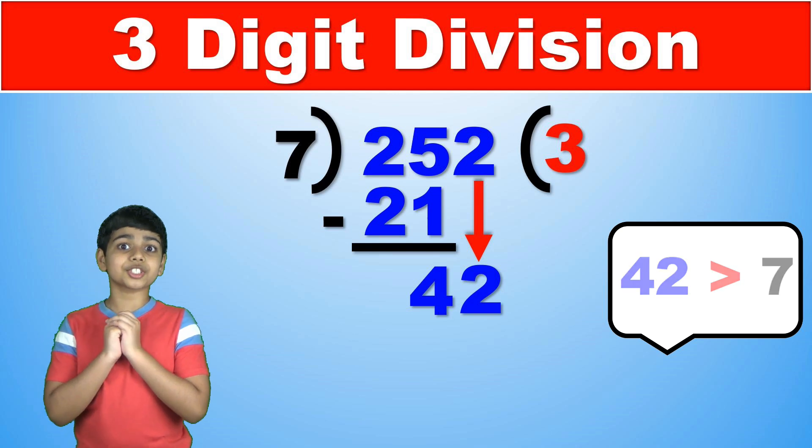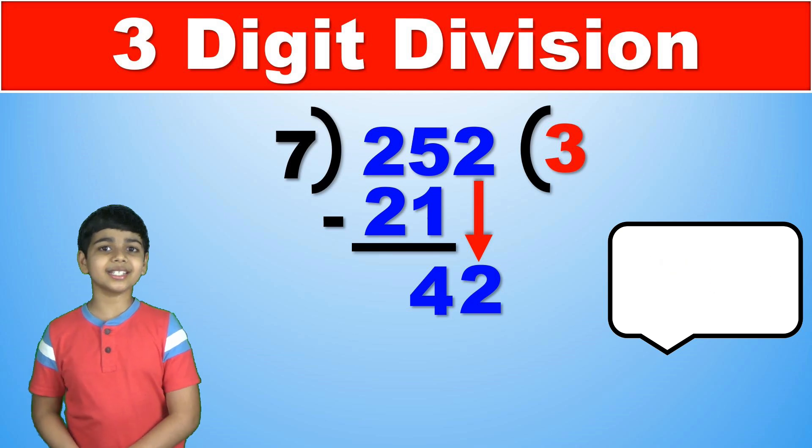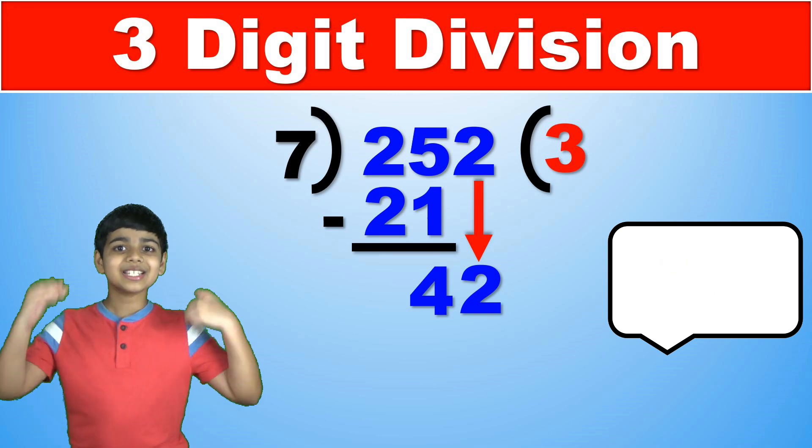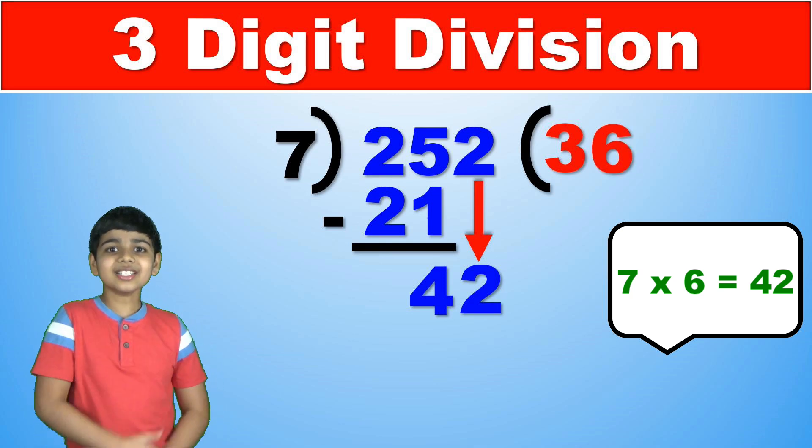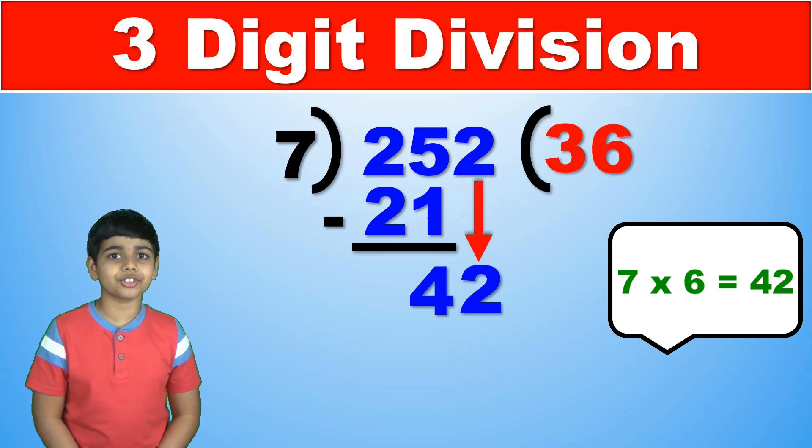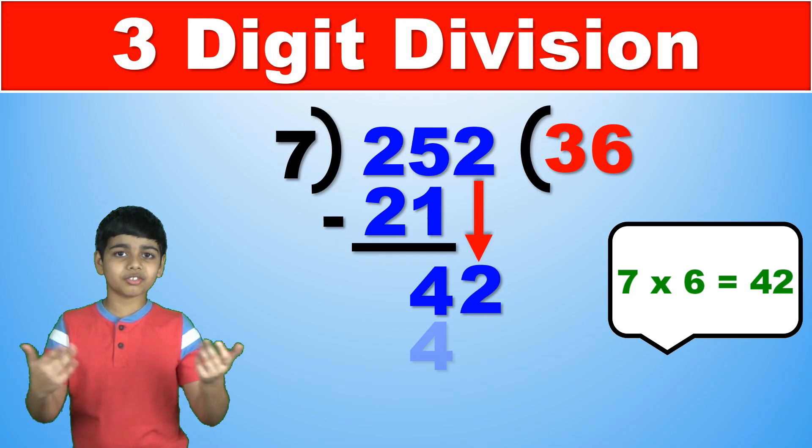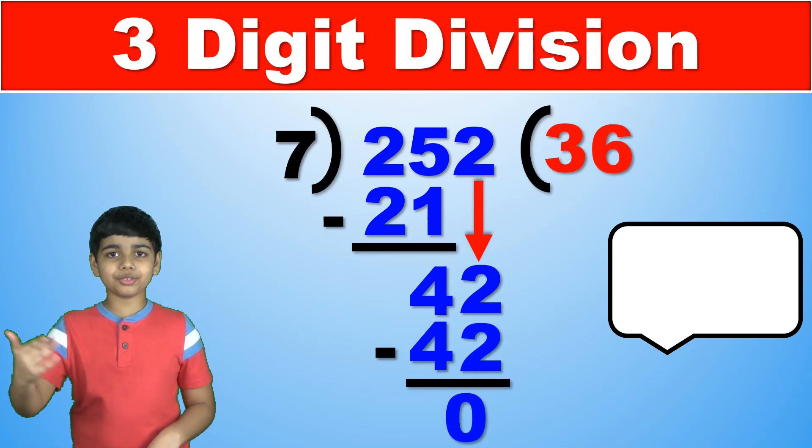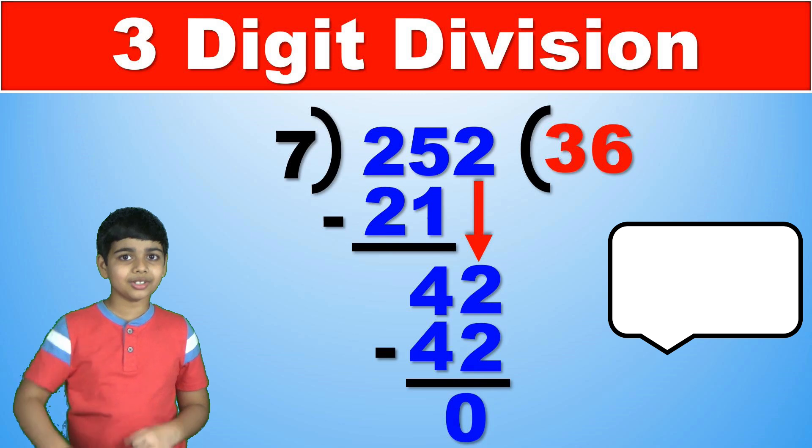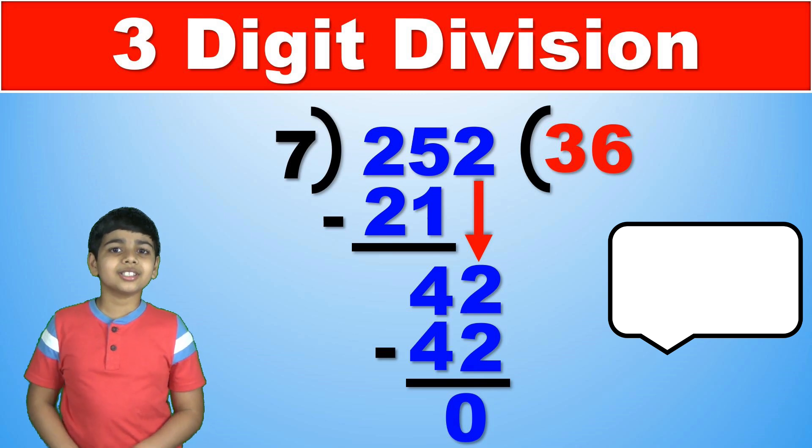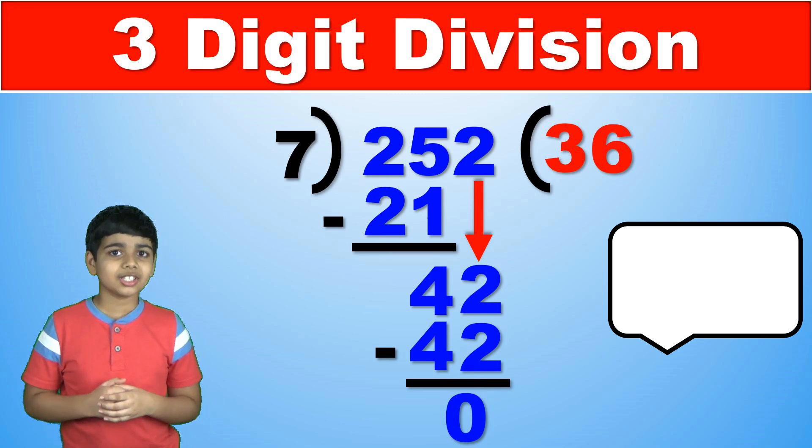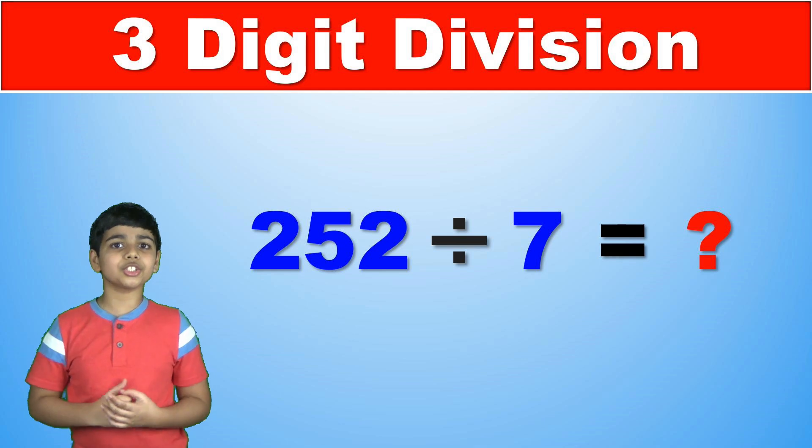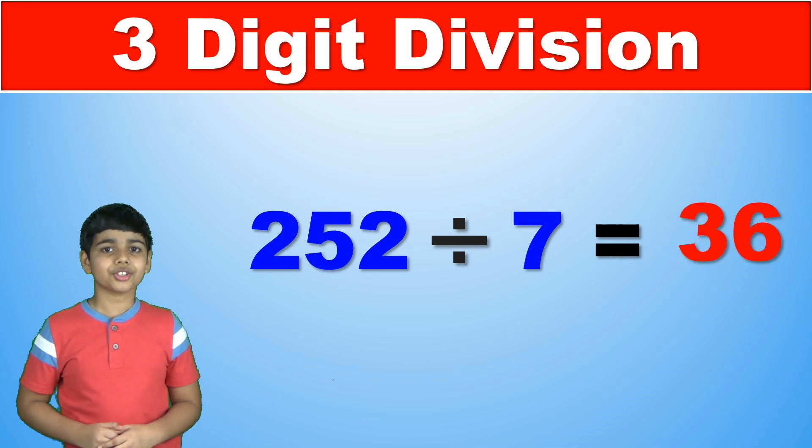And one thing you might notice about 42 is that it is already 7 times 6. So 6 is the last digit of our answer and 7 times 6 is 42. We write 42, and 42 minus 42 is 0. Since there are no remaining digits left we can confirm that 252 divided by 7 is 36.